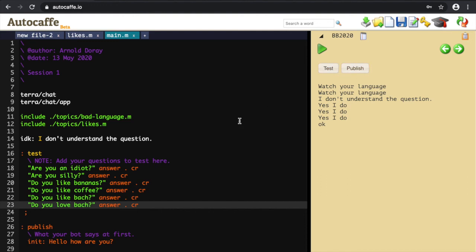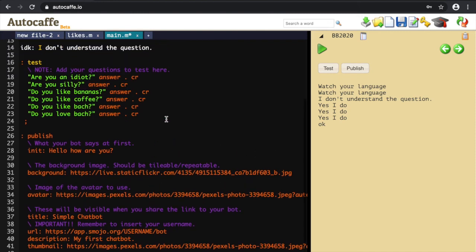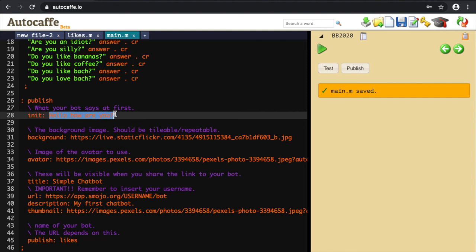I don't want to publish it under the name bot. I want to change the name. I can call it likes. And once I'm happy with that, you save that. And the first line, instead of, hello, how are you? I could say, guess my likes. Okay.